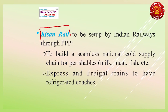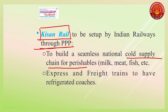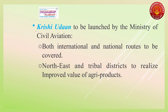Kisan Rail will be set up through public-private partnership mode. It aims at establishing a cold supply chain for perishable goods like milk, meat and fish. There will be refrigerated coaches in various express and freight trains. Freight trains are trains involved in the transportation of various goods and materials.